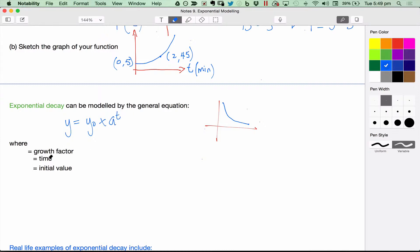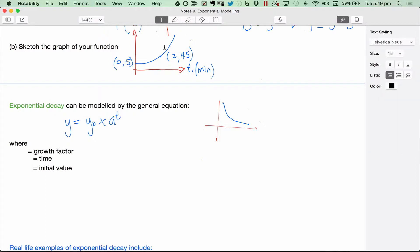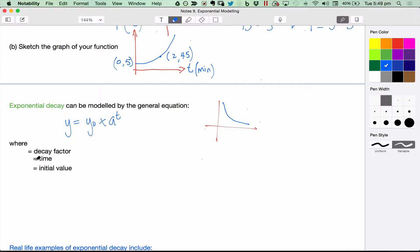y equals y0 times a to the t. Similar equation. Oh, there's an error. Instead of the growth factor, we're going to have decay factor. And the decay factor is a, t is time, and y0 is the initial value.